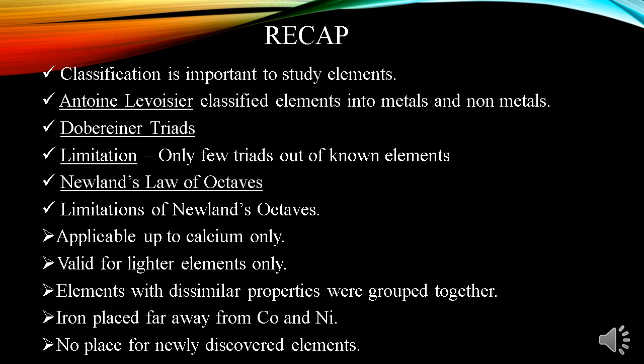This law is valid for lighter elements only. That means, elements with higher atomic masses could not be accommodated in this pattern. Third limitation, elements with dissimilar properties were grouped together. For example, the halogens were grouped with some metals such as cobalt and nickel. As we know, they are not similar from any aspect. Then, iron is placed far away from cobalt and nickel though they are similar in properties. And lastly, there is no place for newly discovered elements in octave pattern.